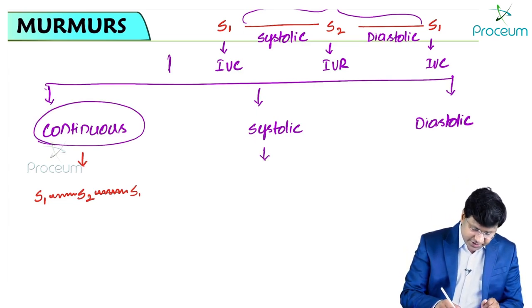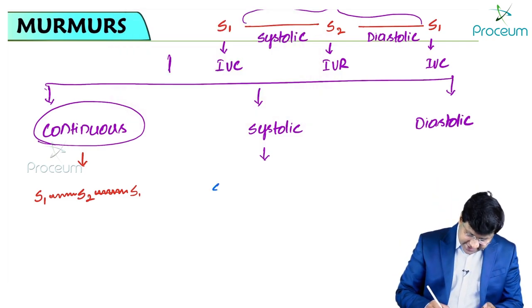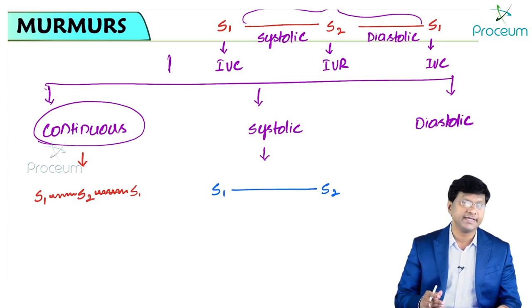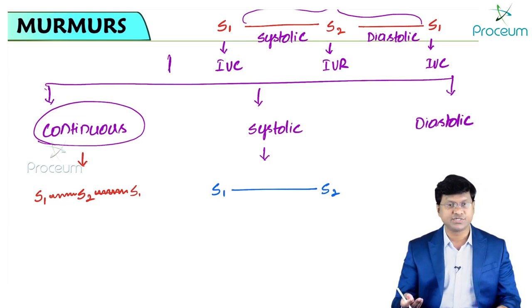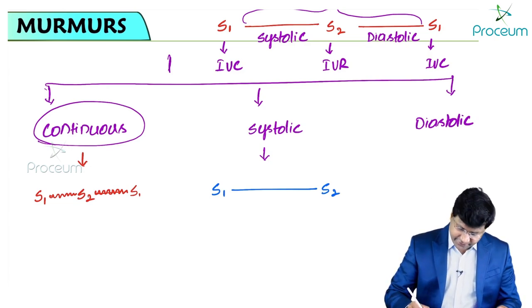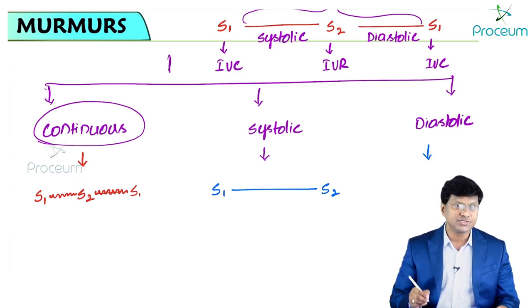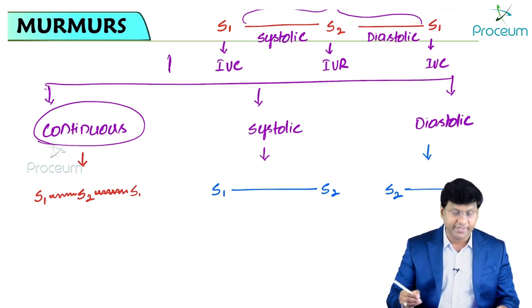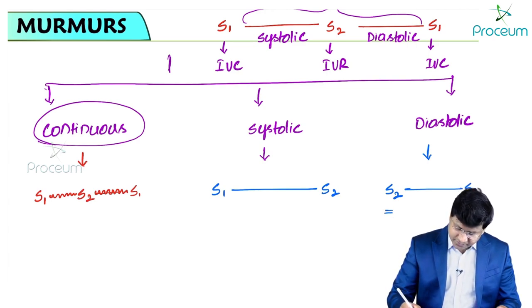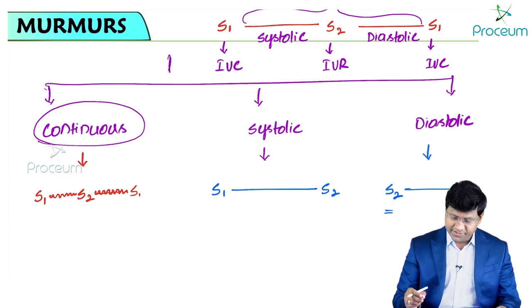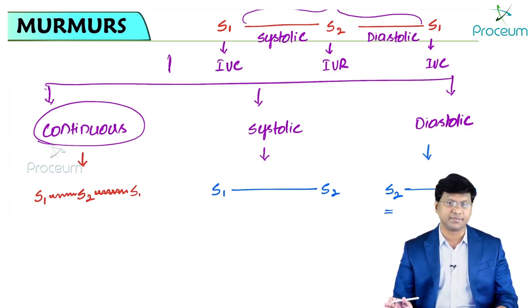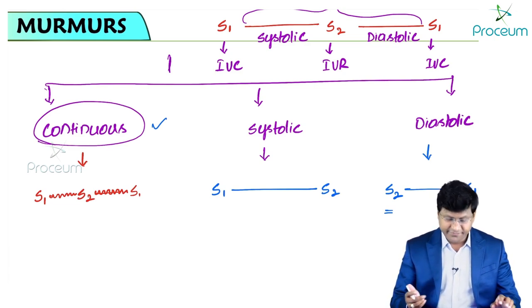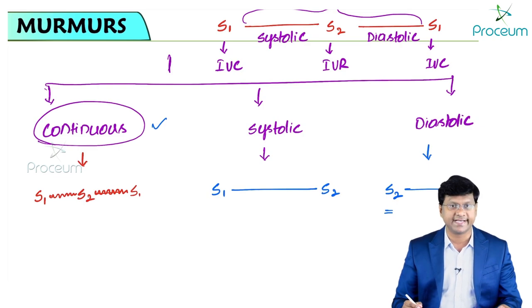Systolic murmurs start at S1 and end at S2. We describe them as early systolic, mid systolic, late systolic, or pan-systolic. Diastolic murmurs start at S2 and continue up to S1. Any murmur occurring between S2 and S1 is a diastolic murmur. Let me now discuss continuous murmurs first, followed by systolic and diastolic murmurs.